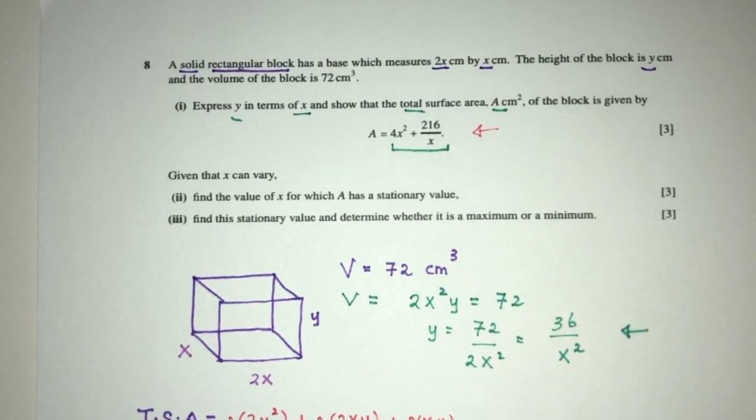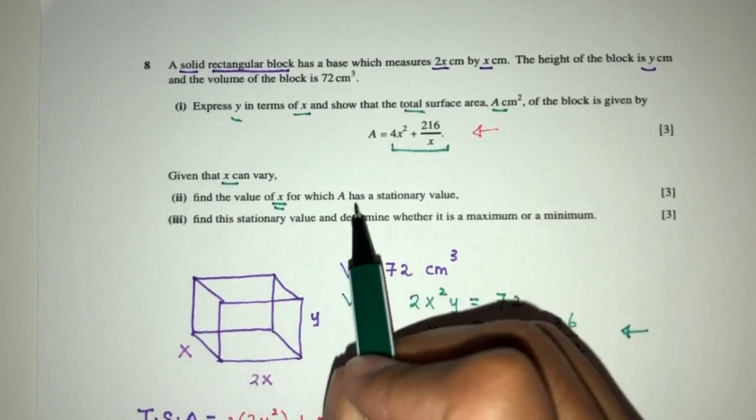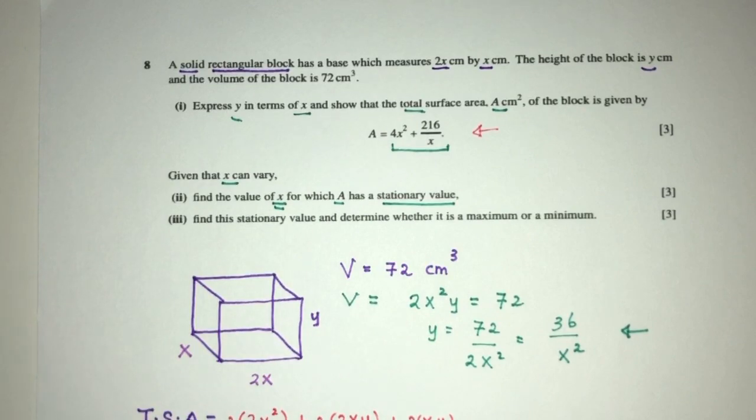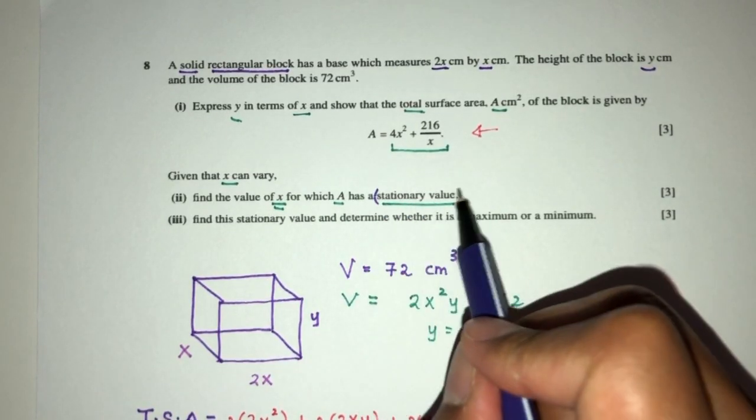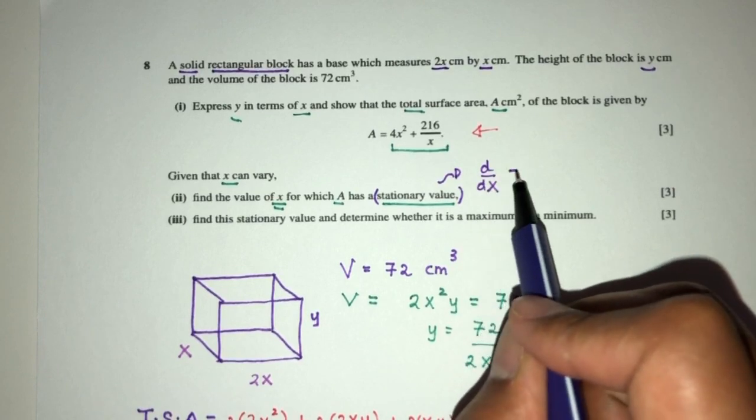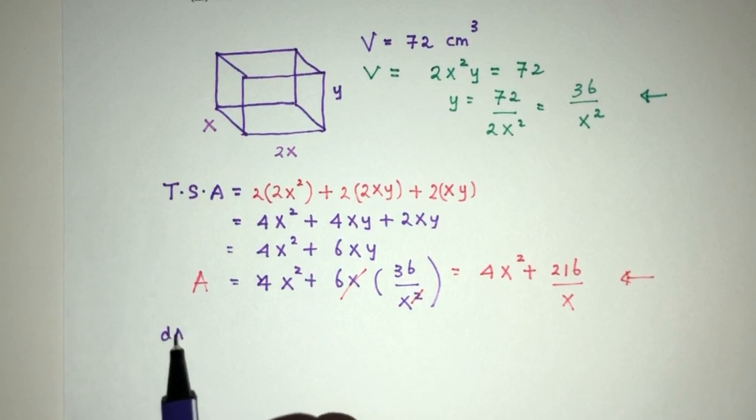Now let's move on to the question part 2. Given that x can vary, we have to find the value of x for which A has a stationary value. Now we have to know this, that whenever you see this mentioned, we are going to be finding dA by dx and equating that to 0. So here in this case, we have to find dA by dx. At the stationary value, we know that dA by dx is equal to 0.